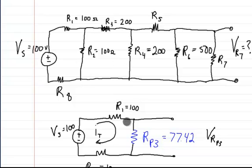But here, what we want to know is what's the voltage on R7, what's the voltage on this resistor? So in order to do that, we actually have to work backwards.